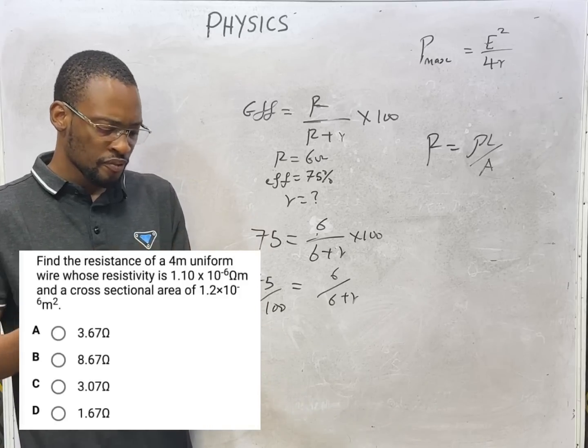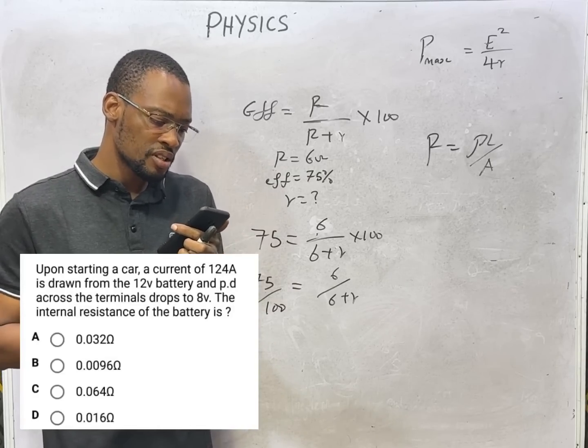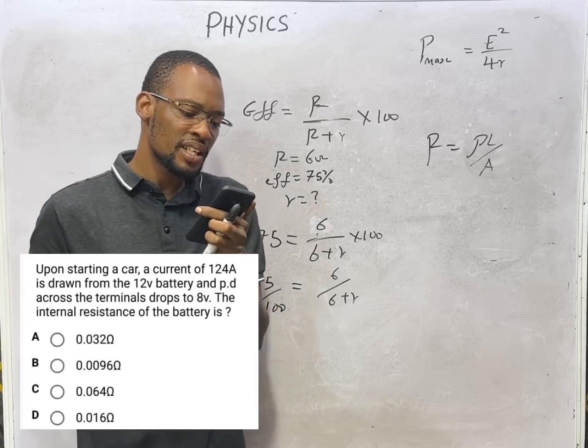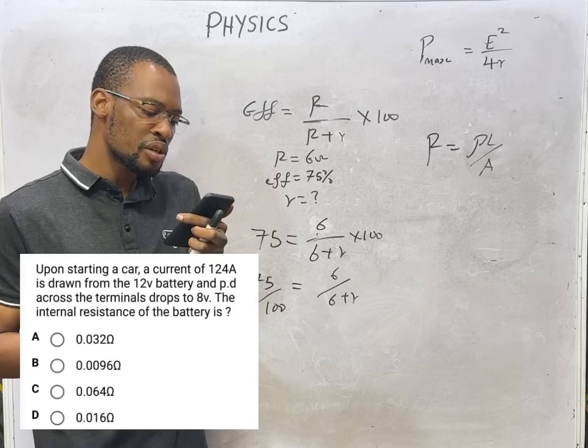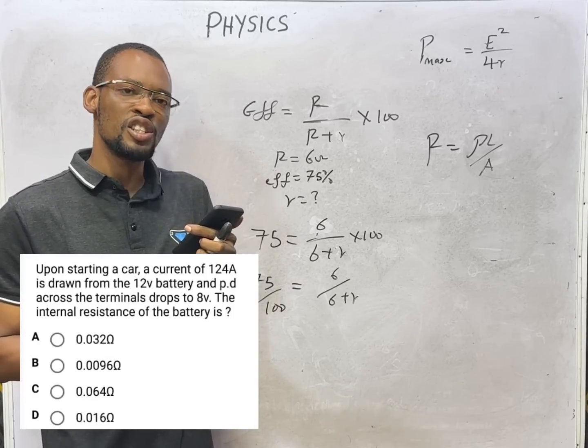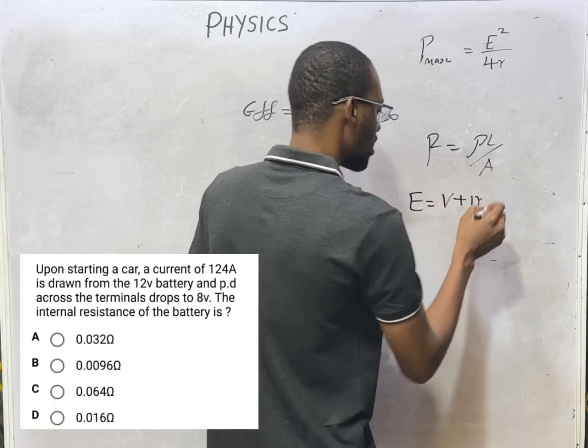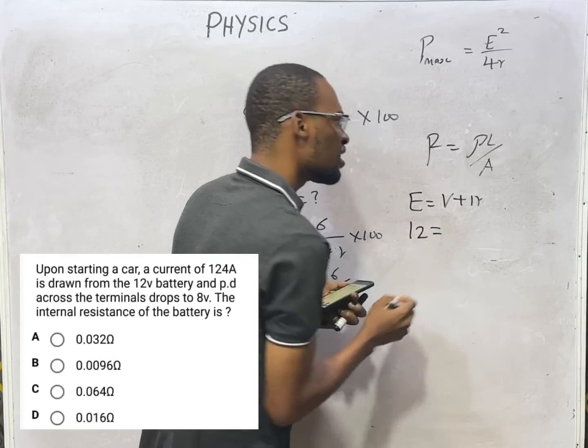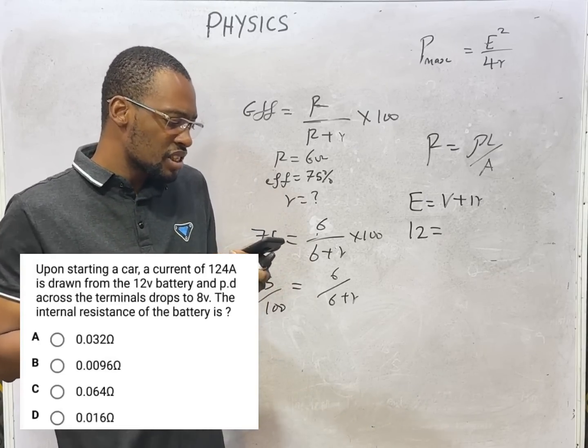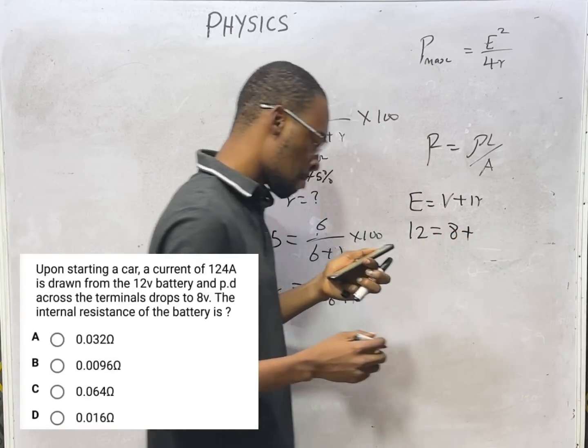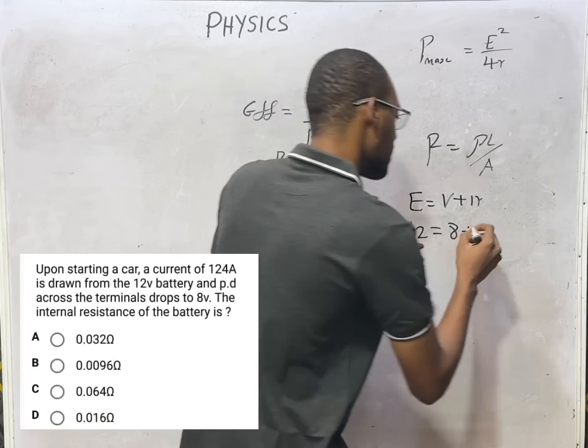Upon starting a car, a current of 124 ampere is drawn from the 12 volt battery and the potential drop across the terminals drops to 8 volts. The internal resistance of the battery is what? If you are told that a battery is 12 volts, that 12 volts is the emf of the battery. So emf is V + Ir. Emf is 12 volts for car battery. The potential drops to 8 volts, that is the voltage.